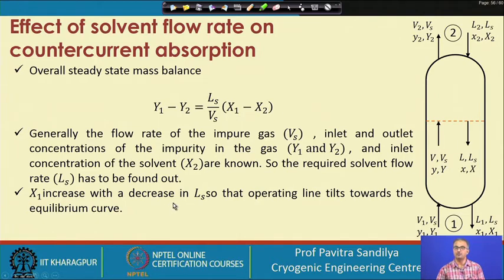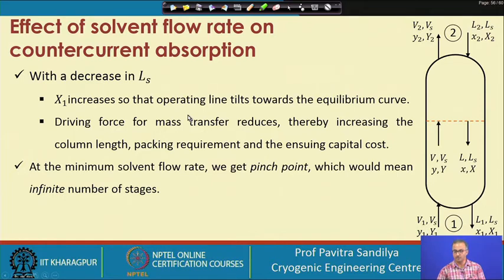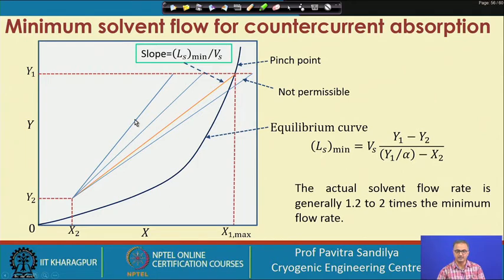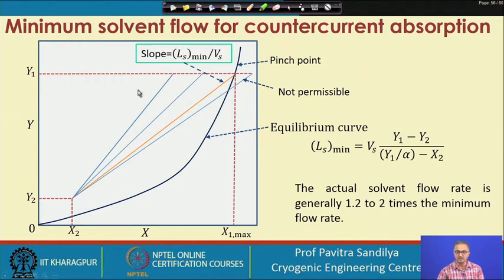If we decrease the value of L_s, we find that x1 increases from the mass balance equation. From the point of view of the operating line, decreasing L_s causes x1 to increase, so the operating line tilts toward the equilibrium curve and the driving force for mass transfer reduces, thereby increasing column length, packing requirement, and capital cost. As we keep decreasing L_s, this operating line shifts towards the equilibrium curve, meaning the concentration difference — the driving force — keeps decreasing, and the size of the column for a given separation tends to increase.